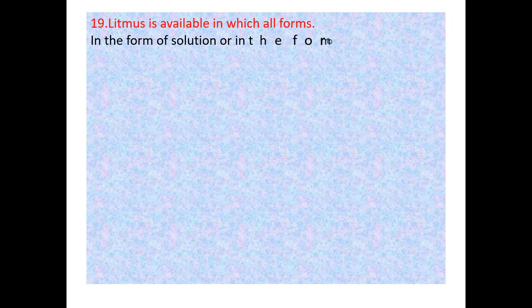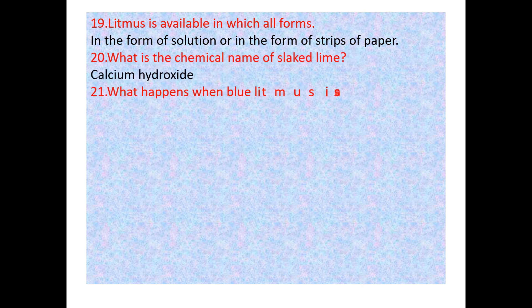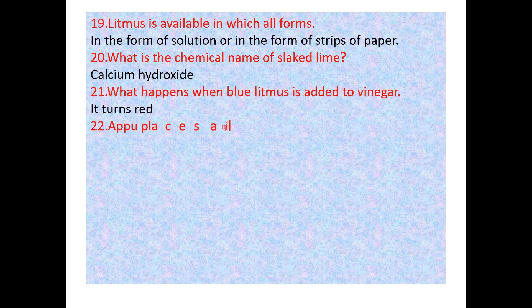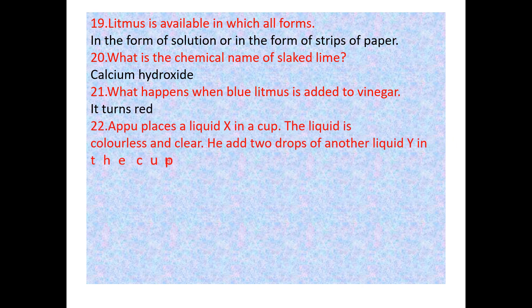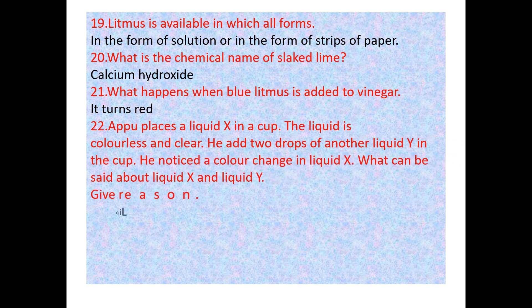Question 18: Litmus is available in which forms? In the form of solution or in the form of strips of paper — either blue or red. Question 19: What is the chemical name of slaked lime? Calcium hydroxide. Question 20: What happens when blue litmus is added to vinegar? Since vinegar is an acid, it turns red.